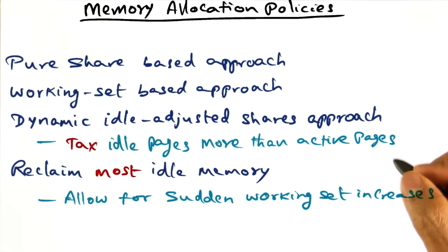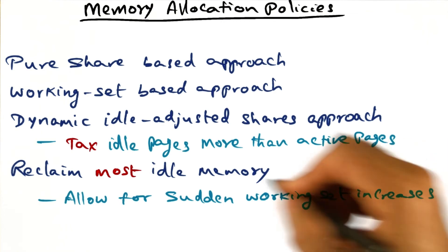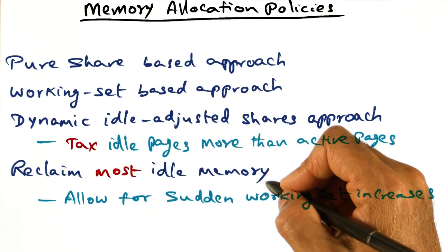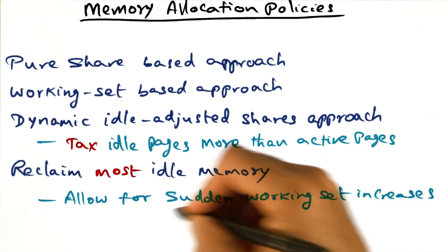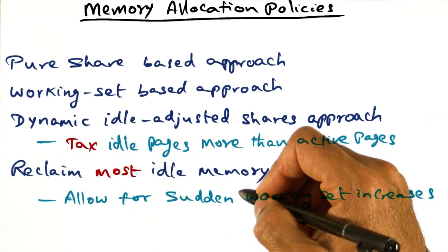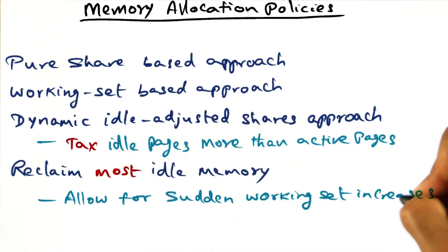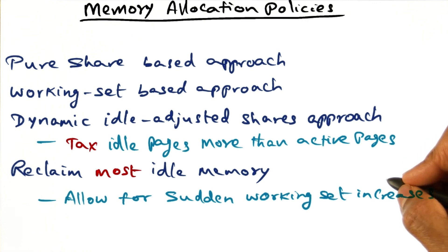By having a tax rate that is not quite 100% — maybe 50% or 75% — we can reclaim most of the idle memory from VMs not actively using it, but still allow for certain working set increases. Suddenly a domain starts needing more memory; at that point it may still have some reserves in the idle pages that were not taken away. The key point is that you don't want to tax at 100%, because this allows for working set increases in a virtual machine that was idle but suddenly has work pick up.